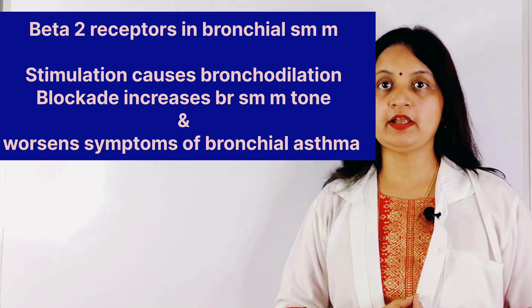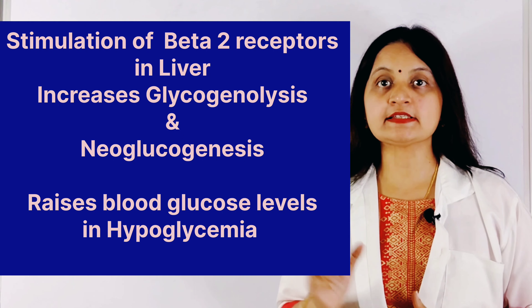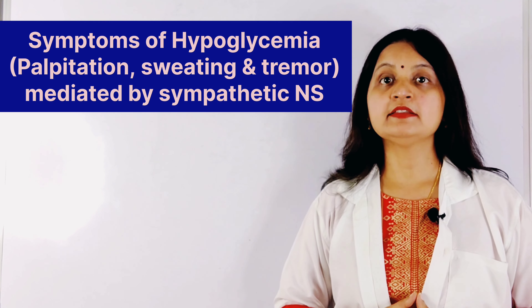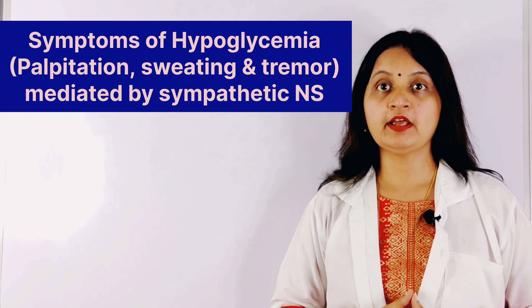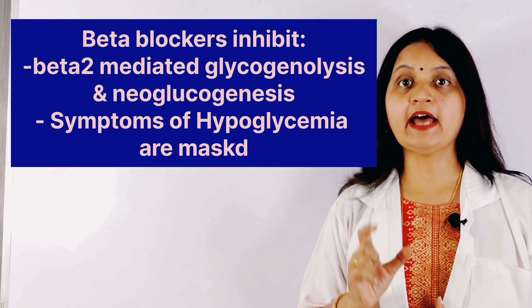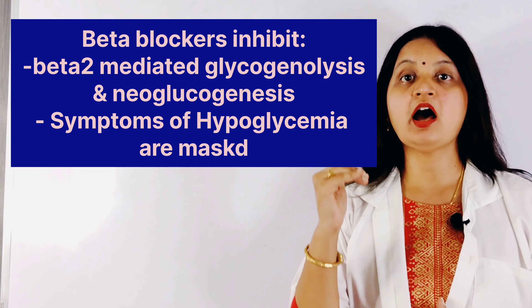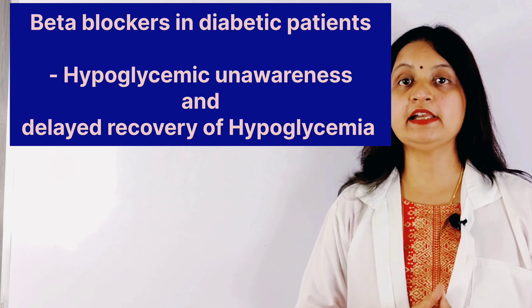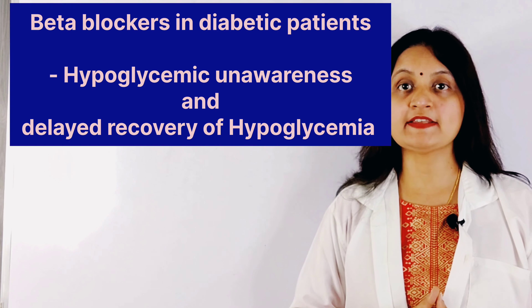The third site of beta 2 receptor action is the liver. Stimulation of beta 2 receptors in the liver cells results in glycogenolysis and gluconeogenesis, which helps in raising the blood glucose level in response to hypoglycemia. Also, in hypoglycemia, the symptoms related to sympathetic stimulation — such as palpitation, sweating, and tremor — alert the patient to take glucose. The use of beta blockers in diabetic individuals who are more susceptible to insulin-induced hypoglycemia blocks these compensatory mechanisms that raise blood glucose, so the patient goes into hypoglycemic unawareness or hypoglycemic coma. The symptoms that warn the patient to take glucose are also blocked, further increasing the incidence of hypoglycemic unawareness.